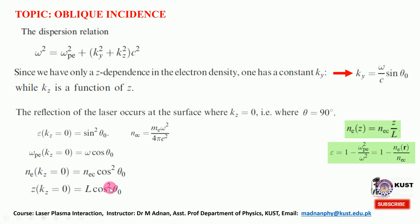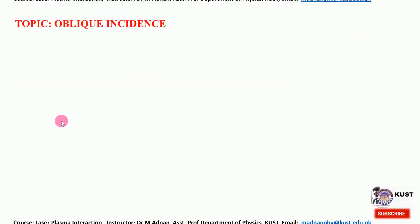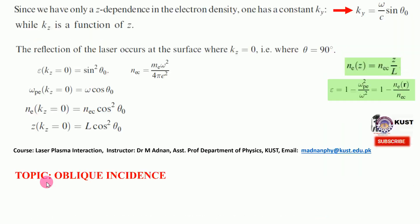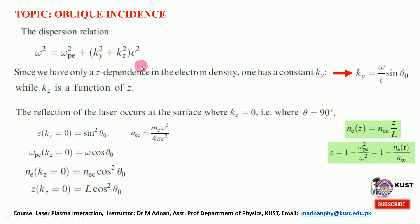The location of reflection is now at z equal to L times cosine squared theta_0. The new configuration of the reflection point has changed from normal incidence, where epsilon equal to zero meant omega_p equals omega and density equals the critical density. Now one can see how these limits change when the incoming electromagnetic wave makes an angle theta_0.